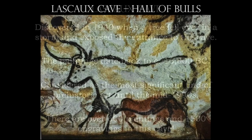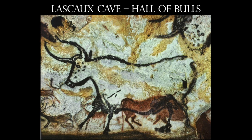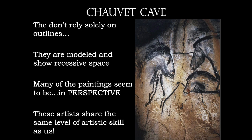The largest cave painting of an individual animal ranges roughly 18 feet from horns to hind legs. In the 1990s, we have the Cave at Chauvet, with figures dating back to over 30,000 BC. What's different about Chauvet is that these works look more modeled — they show recessive space and seem to be in perspective, something we didn't figure out until the 1400s AD. This makes us rewrite these early chapters in history books, because man had the same artistic skill then as we do now.